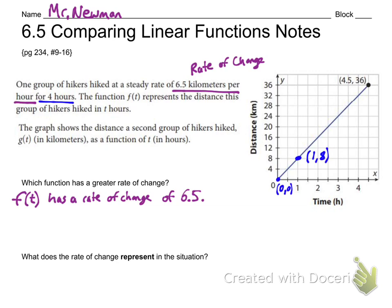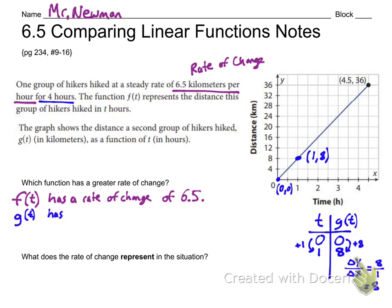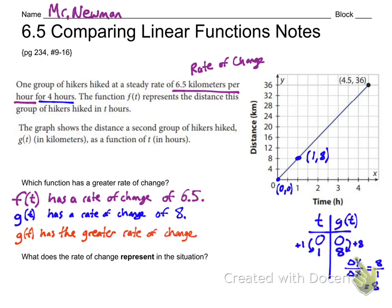f(t) has a rate of change of 6.5 — that's the kilometers per hour stated in the problem. For g(t), I'm going to use the points (0, 0) and (1, 8) in a table. The rate of change is delta y over delta x, which is 8 over 1, or 8. So g(t) has a rate of change of 8. Notice I haven't answered the question yet — g(t) has the greater rate of change.